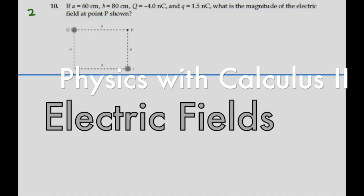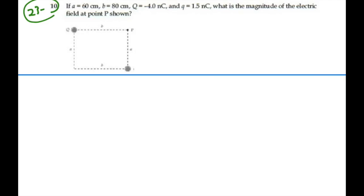Here's problem 2310. If A is equal to 60 centimeters, B is equal to 80 centimeters, big Q is minus 4 nanocoulombs, and little q is 1.5 nanocoulombs, what is the magnitude of the electric field at point P shown?